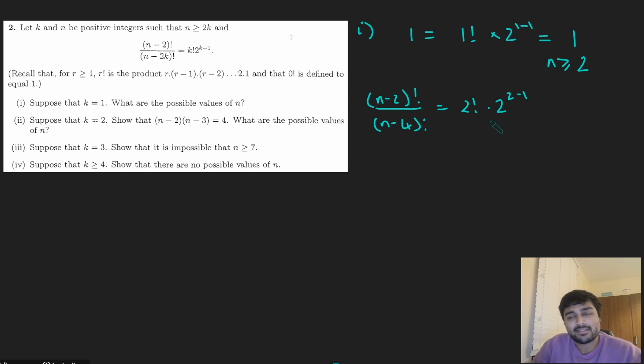This right-hand side is nice and easy. 2! is 2, 2 to the 1 is 2, so that's going to be 4. What about the left-hand side?